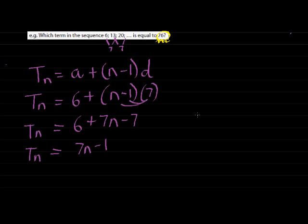That means that we are given the 76, the term value, and we are asked to find the term's position, which term it is. Now that means Tn is 76, so it's simply the solution of this equation.